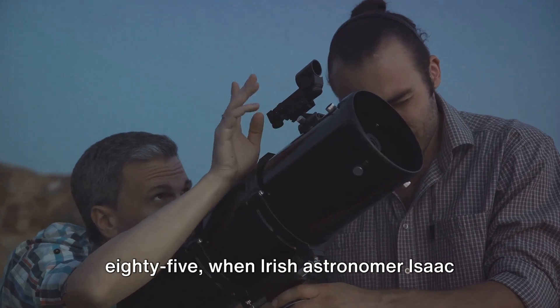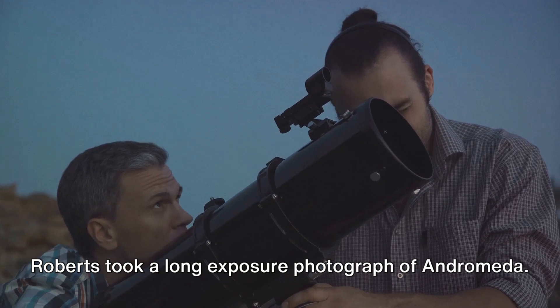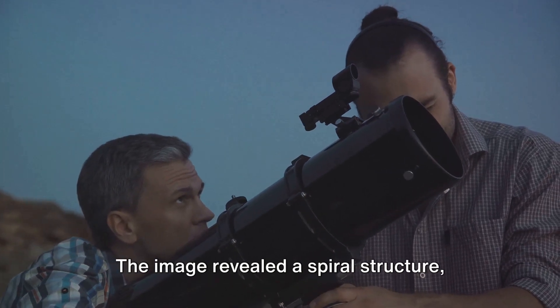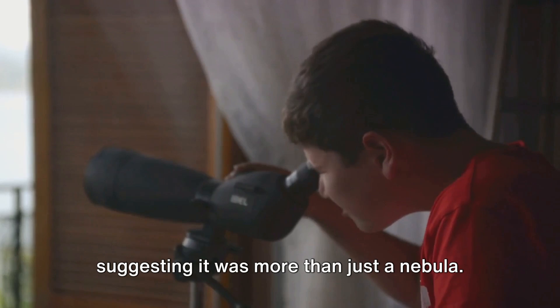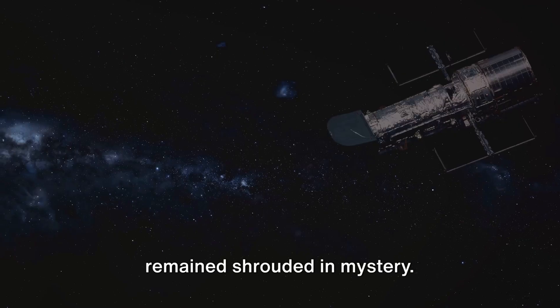Fast forward to 1885, when Irish astronomer Isaac Roberts took a long exposure photograph of Andromeda. The image revealed a spiral structure suggesting it was more than just a nebula. Still, the true nature of Andromeda remained shrouded in mystery.